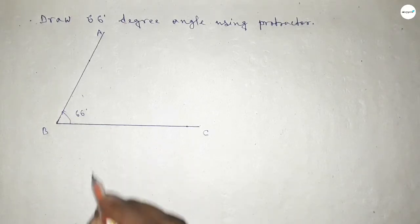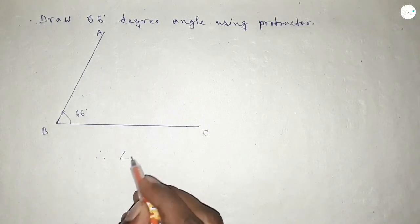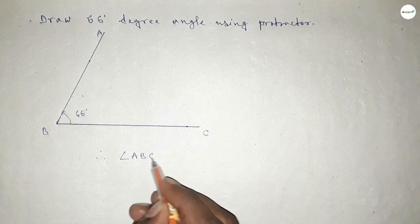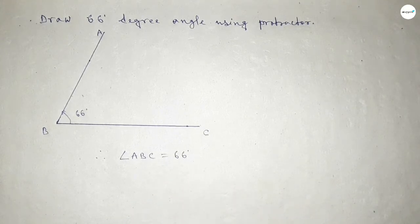So angle ABC equals 66-degree angle. That's all, thanks for watching. If this video is helpful to you, then share it with your friends.